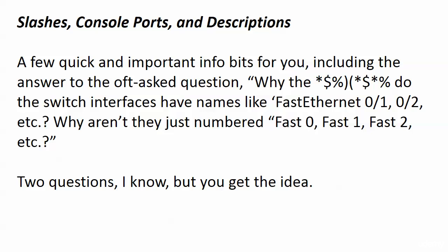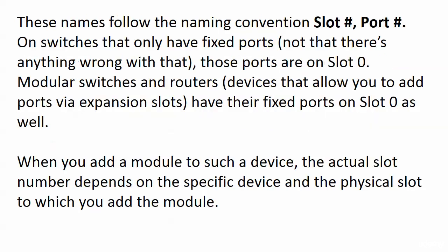Why do switch interfaces have names like FastEthernet 0/1, 0/2, etc.? Why aren't they just numbered 0, 1, 2, 3, 4 — like normal people count? Because when we're counting on our fingers or anything else, we don't say this is 0/1, 0/2, etc. Well, here's where that comes from.